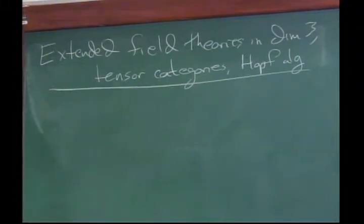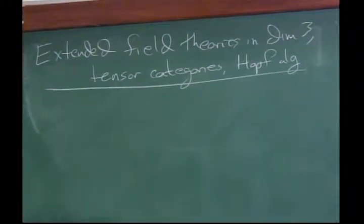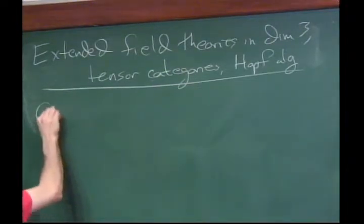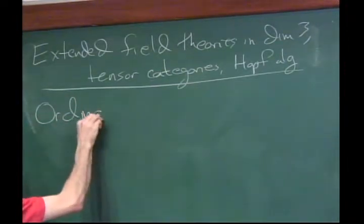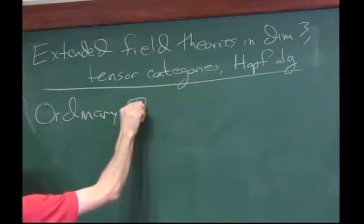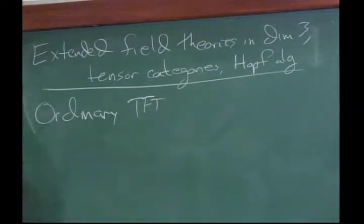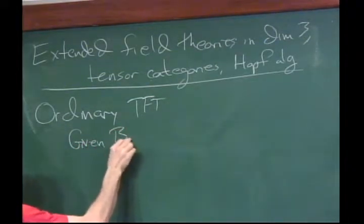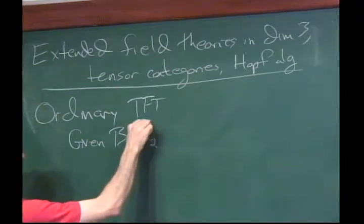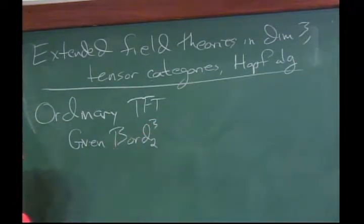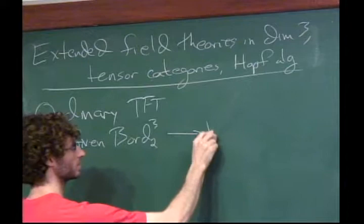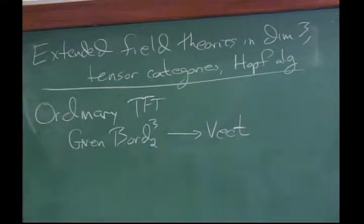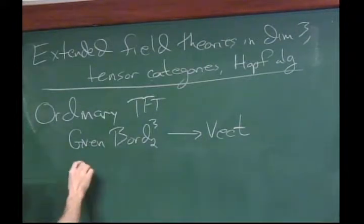We did dimensions one and two, so the next natural thing is to try dimension three. Suppose we just try to do the same thing and look at ordinary three-dimensional TFTs — that is, a functor from the bordism category whose objects are two-manifolds and morphisms are three-manifolds, to Vect. Let's think about what kind of data that provides.